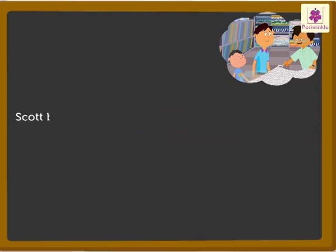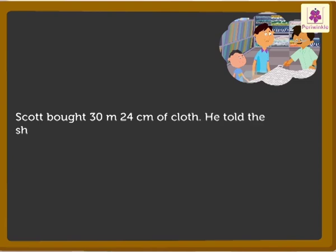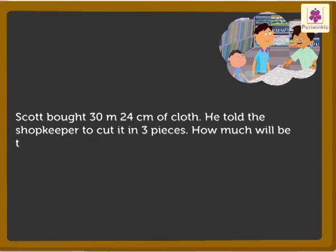Look, Scott bought 30 meters, 24 centimeters of cloth. He told the shopkeeper to cut it in three pieces. How much will be the length of each piece of cloth?